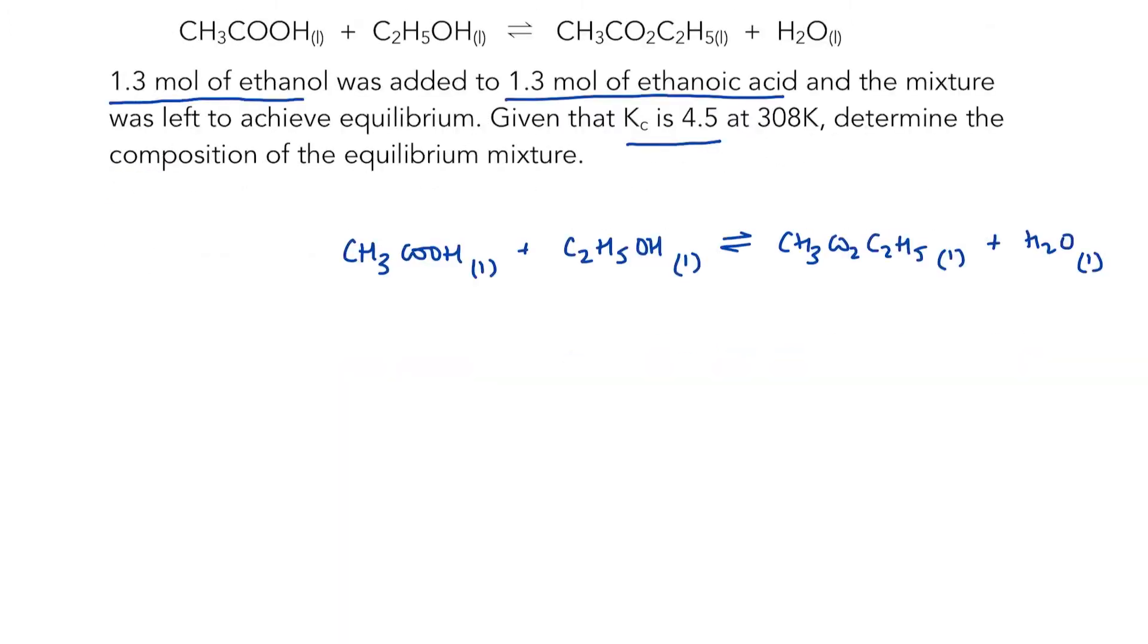I like to start by setting it all out in a sort of grid underneath my equation. So even if I was doing this in an exam, I would write out the equation again. We're working in number of moles. So initially, right at the very start of this experiment, I know that I had 1.3 moles of each of my reactants. And right at the very beginning, before these two had reacted, I would have no moles of either the ester or water.